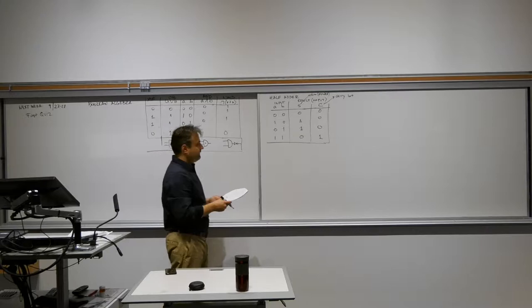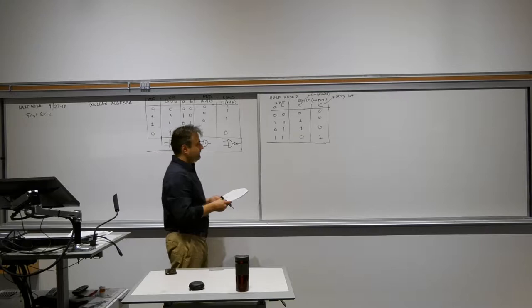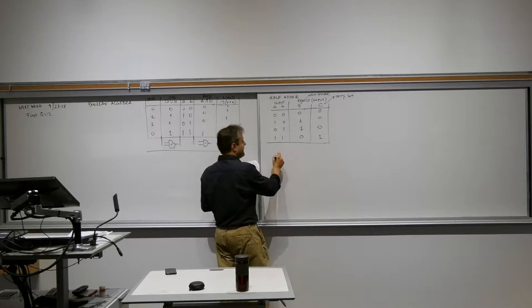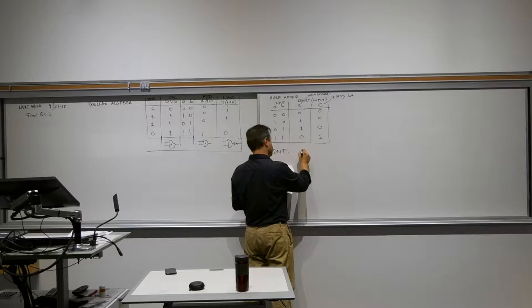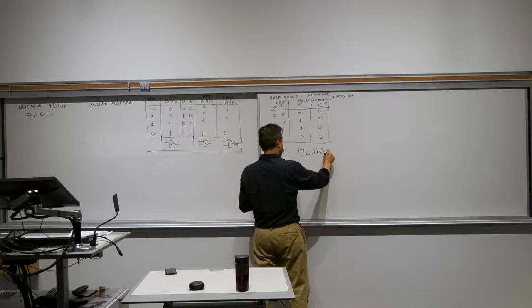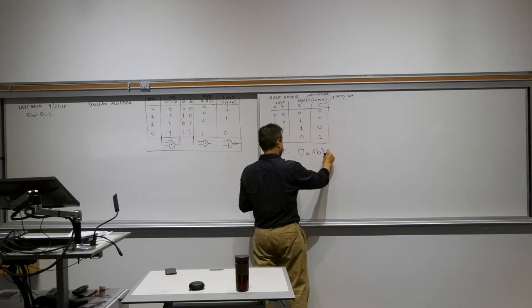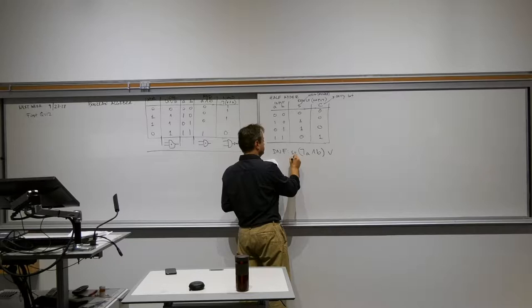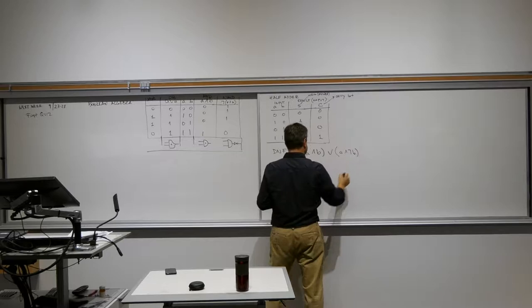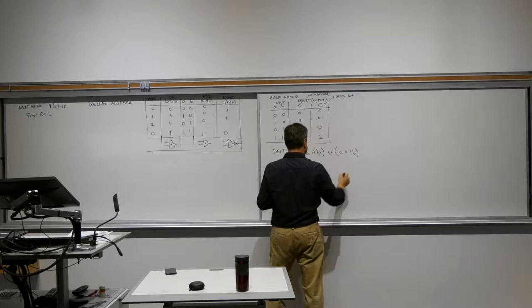So how can I implement this with a circuit? First I have a DNF construction — that's a formula, disjunctive normal form. I need two things: I need the S bit and I need the C bit. There are going to be two formulas. S is (A AND NOT B) OR (NOT A AND B), and the carry bit is A AND B.